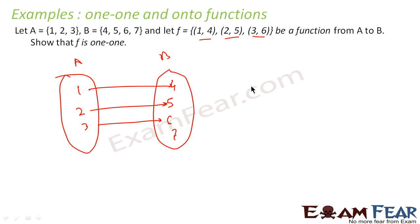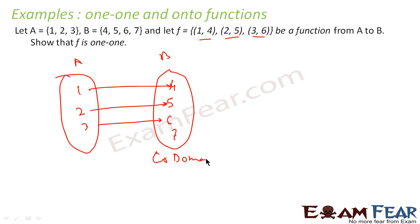We have to prove that it is one-one. If you see, for output 4 there is only one arrow; for 5, only one arrow; for 6, only one arrow. For 7, there is no arrow at all. Since the maximum number of arrows for any element in the codomain is 1, so it is one-one.